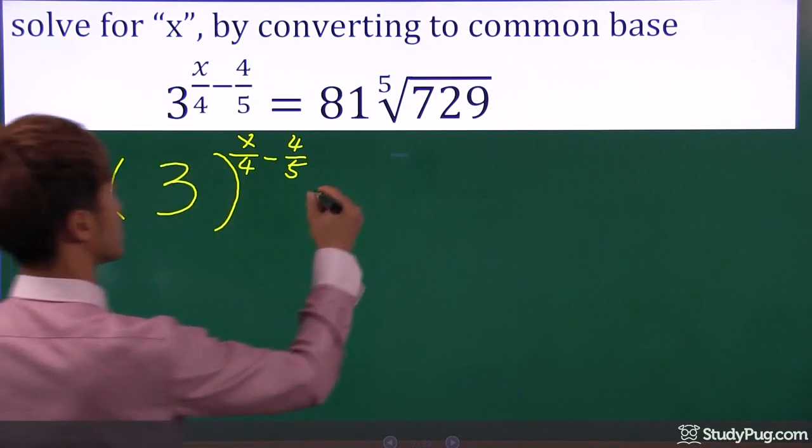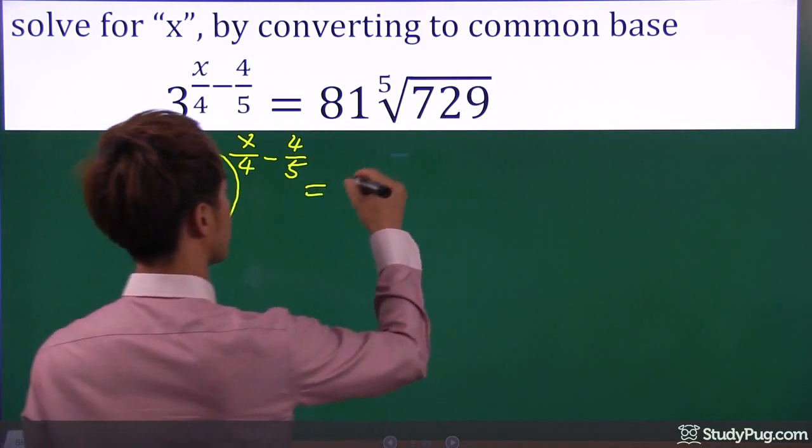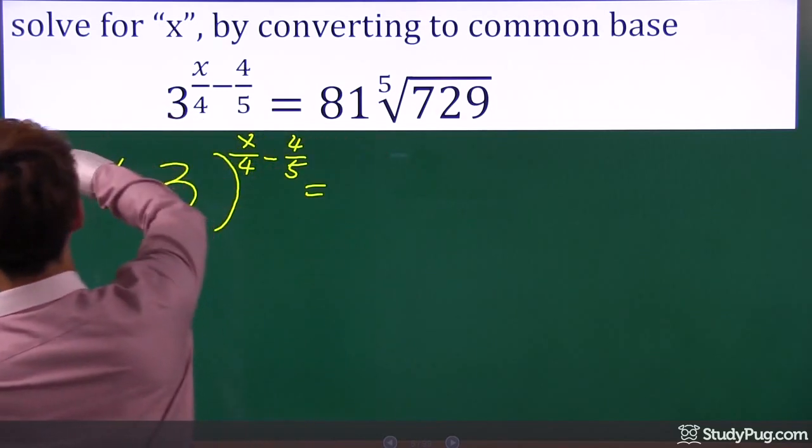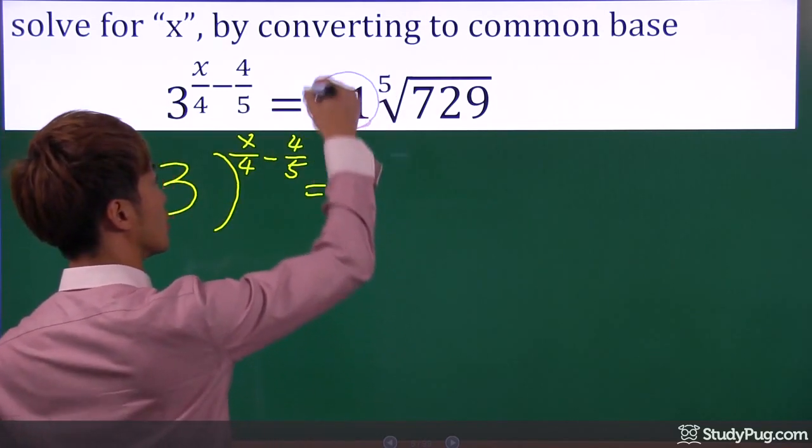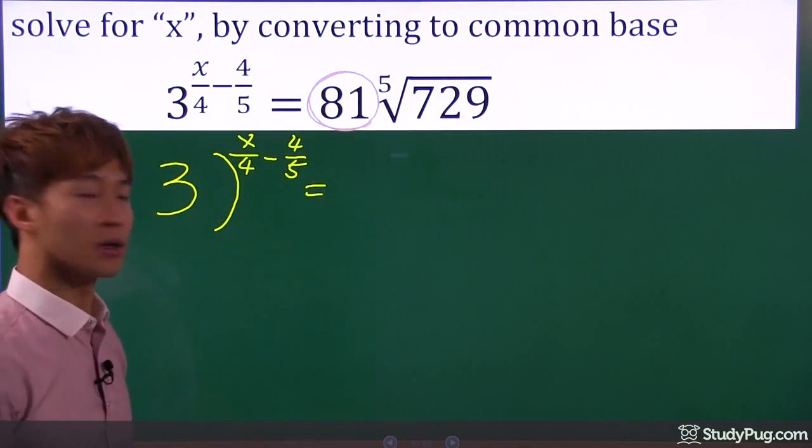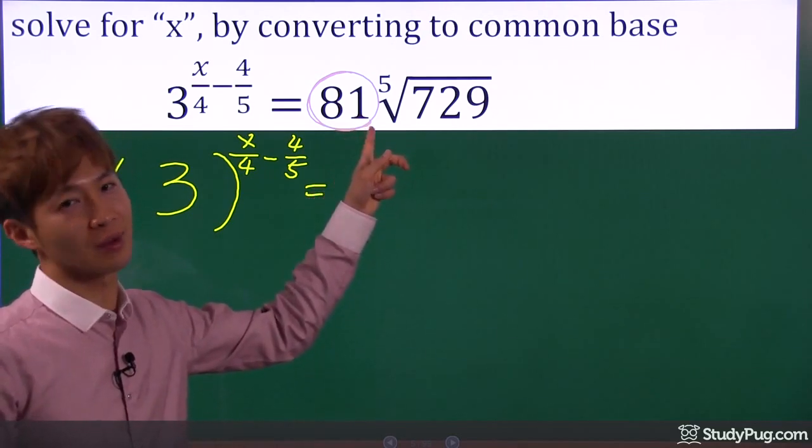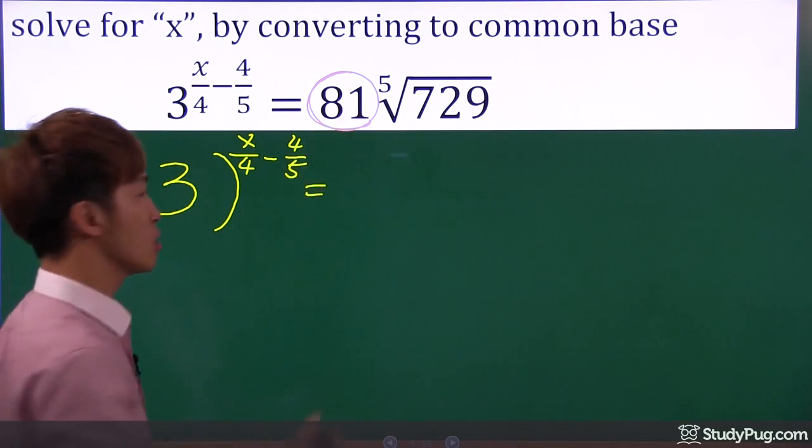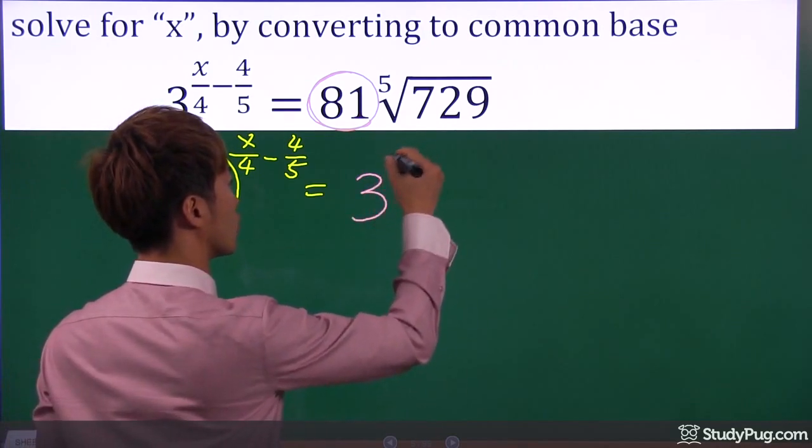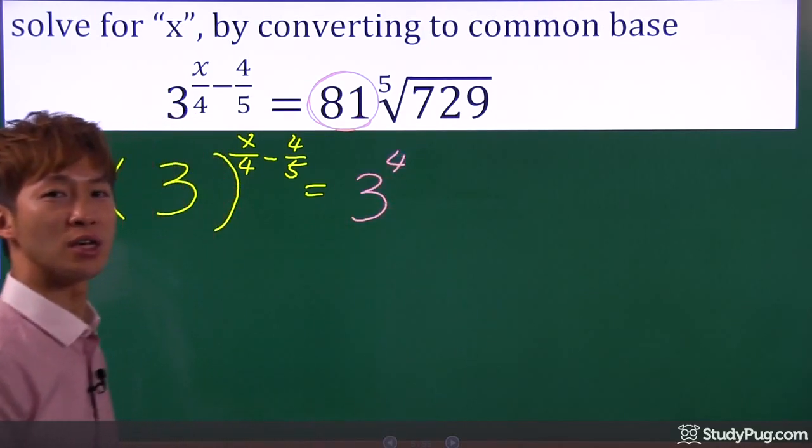So we have three. Now, 81, let's convert that to base of three. In fact, we know 81 is three to the power of four. That's a pretty easy one.